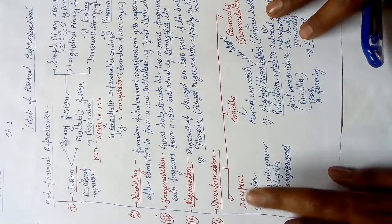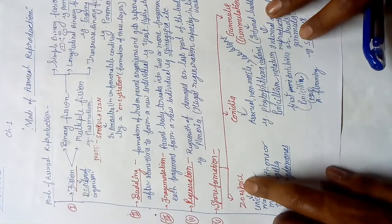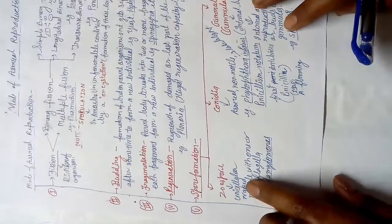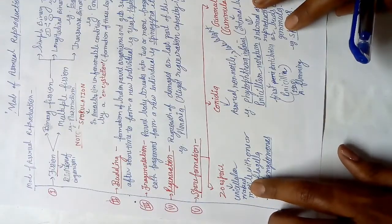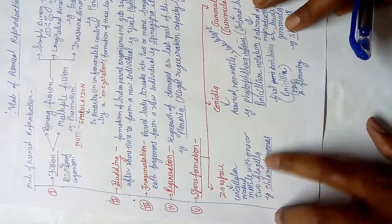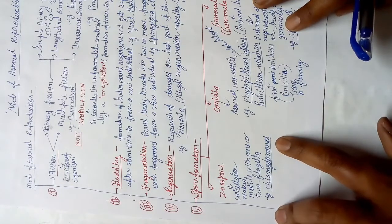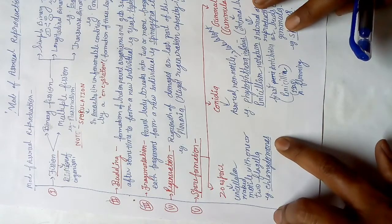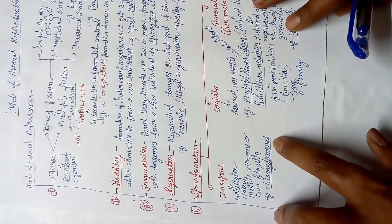Next is spore formation. Zoospores are specially found in algae. These are unicellular, naked — meaning no cell wall is present around them — and motile, with one or two flagella. The example is Chlamydomonas, which has a cup-shaped chloroplast.